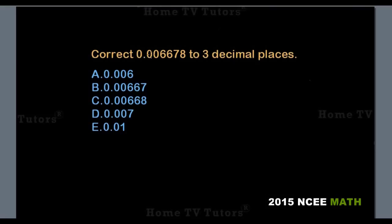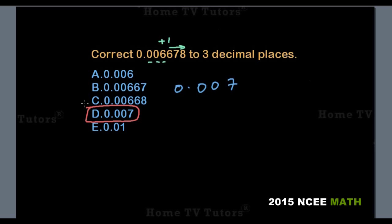Correct 0.006678 to 3 decimal places. We count to 3 places immediately after the decimal point, which gives 006. The first digit of the remaining numbers to be deleted is more than 4, so we increase the value of the digit in the third decimal place by 1. So 0.006678 corrected to 3 decimal places is 0.007. The answer option D is the right answer.